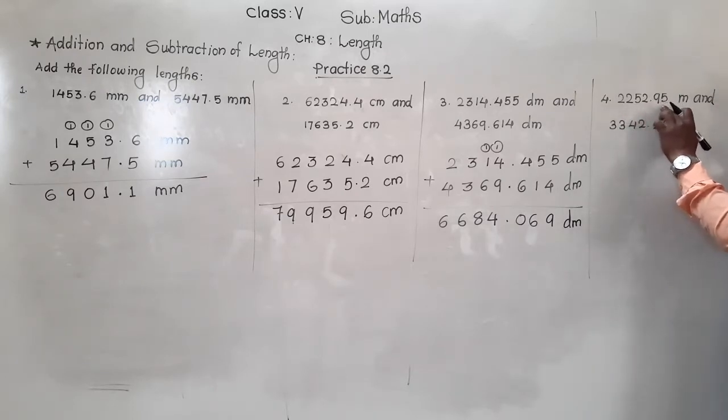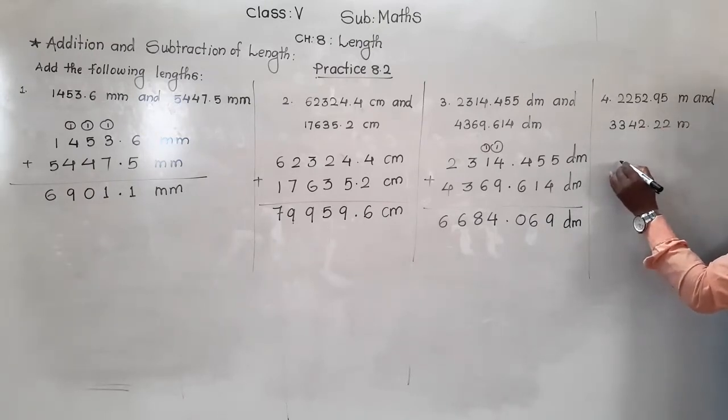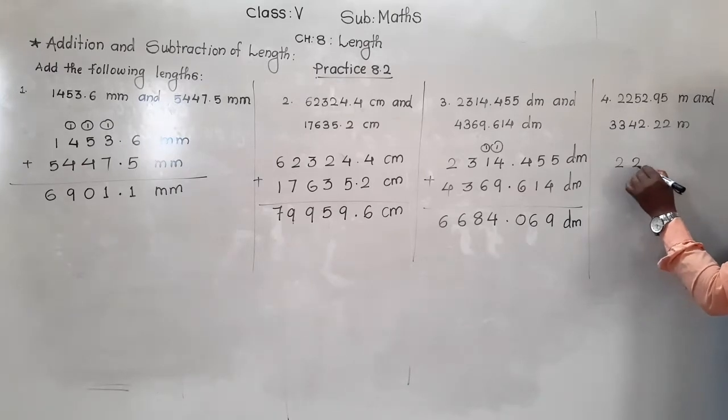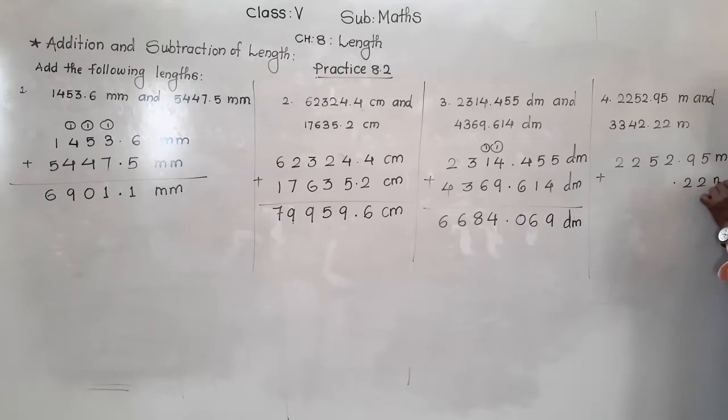Next: 2252.95 meter and 3342.2 meter. Let's see, for the first number 2252.95 meter plus 3342.2.